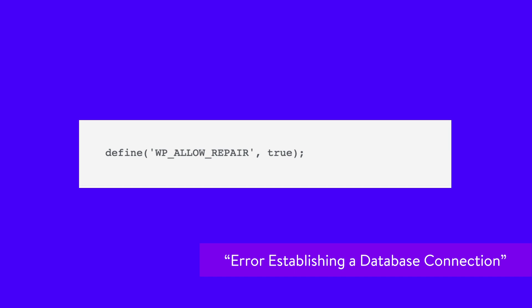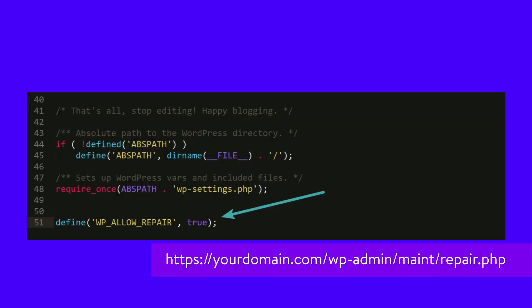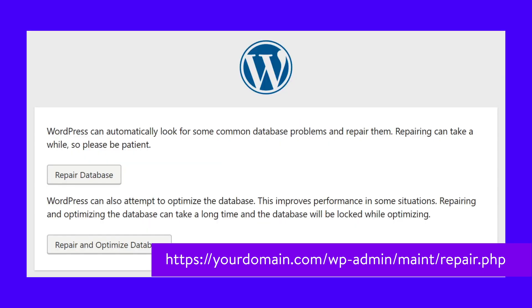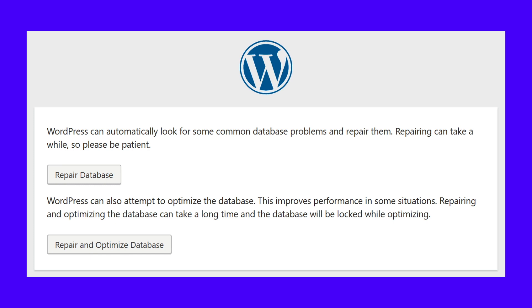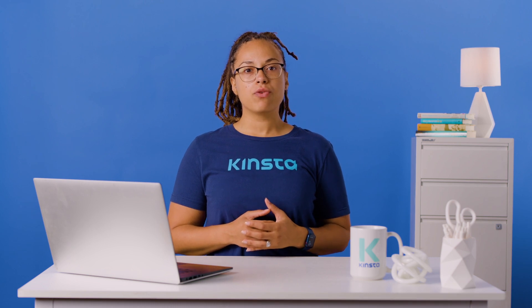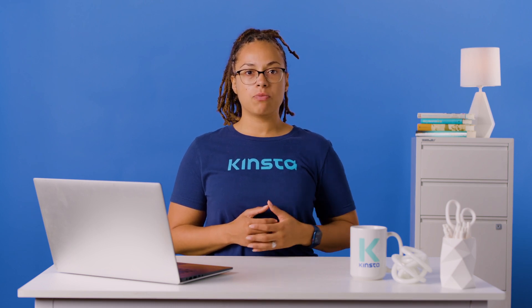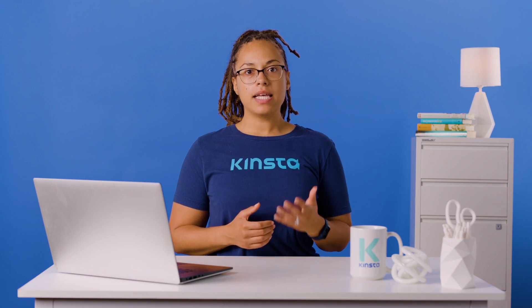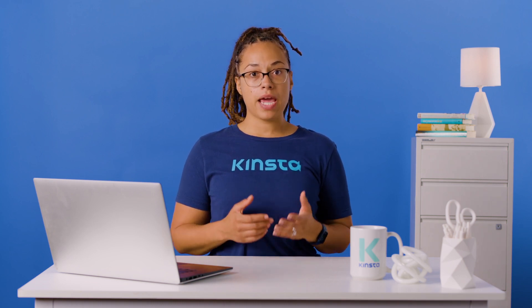WordPress has a database repair mode that you can initiate by adding the following line to the bottom of your wp-config.php file. Then browse to the following location on your WordPress site. You'll then have the option to repair the database or repair and optimize the database. Since you're probably troubleshooting an outage, we recommend using the repair database option as it is quicker. After running the repair, ensure that you remove the line of code you added to your wp-config.php file — otherwise, anyone will be able to access the repair.php page.